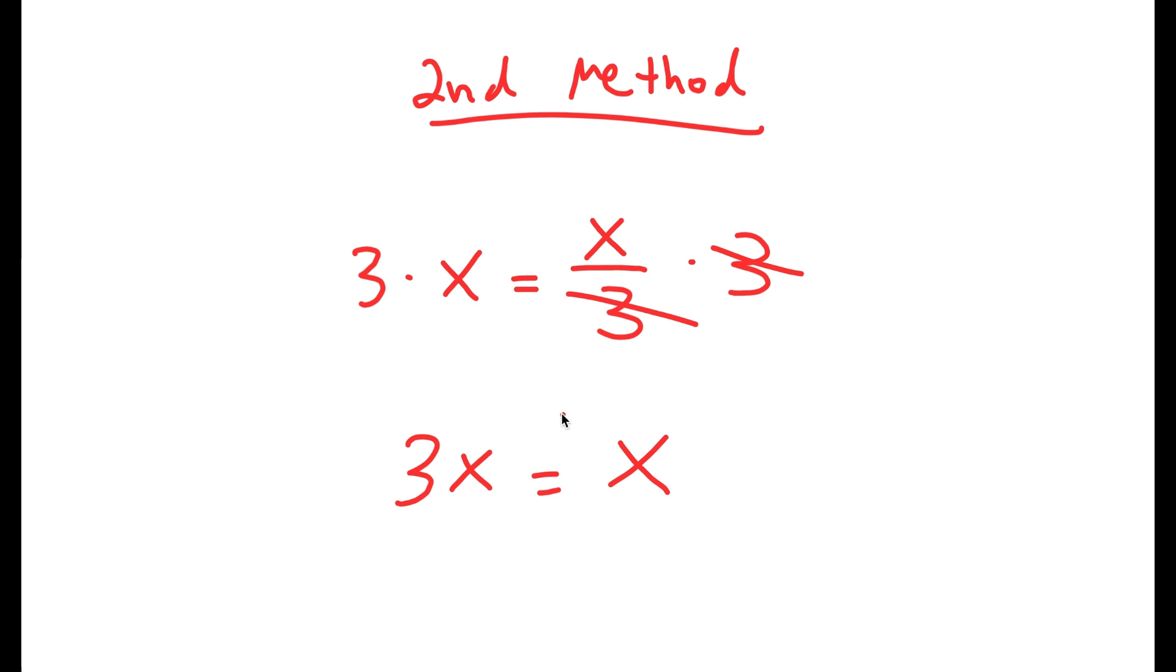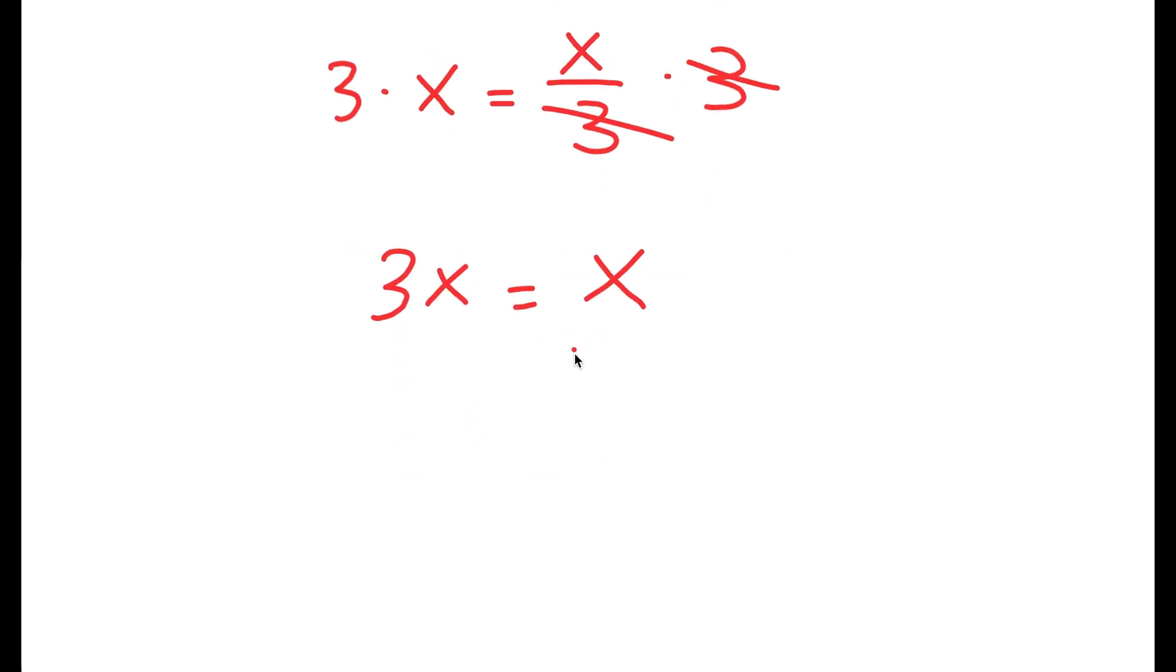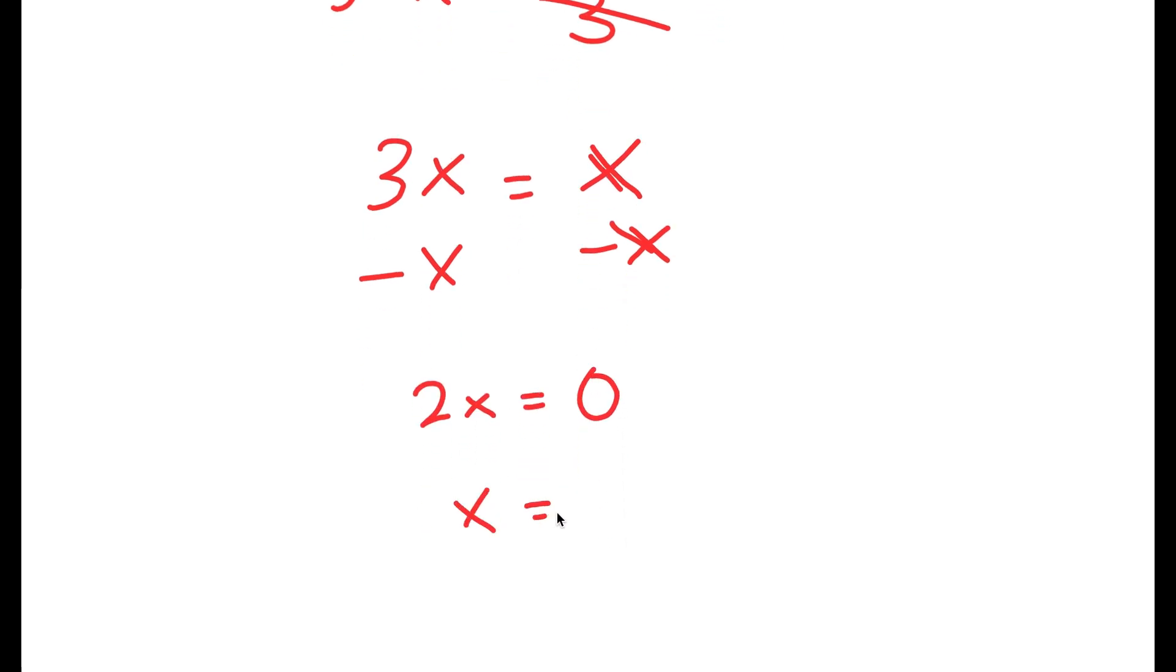So now the mistake that most people make here is that they divide both sides by x. And when you do this, you just get that 3 is equal to 1, which is a false statement. What you have to do is subtract x on both sides. So now you get 2x is equal to 0 and x is equal to 0.